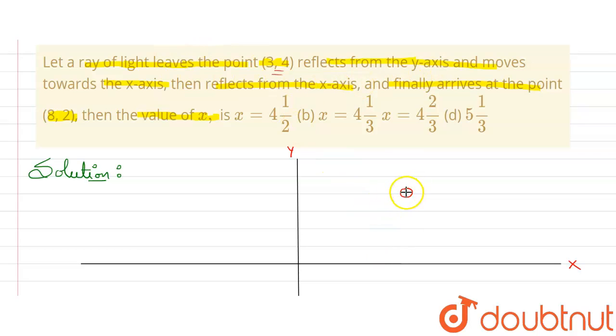Suppose here it is going to y-axis, and then it moves toward x-axis. So from here it will go to x-axis, suppose here. Now it reflects from x-axis and finally arrives at point (8,2).